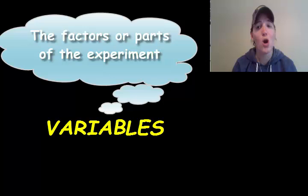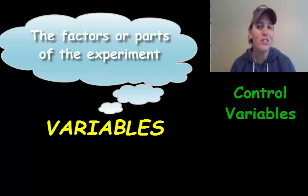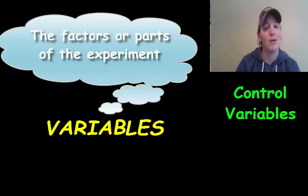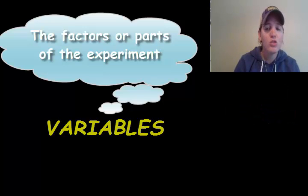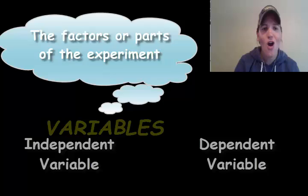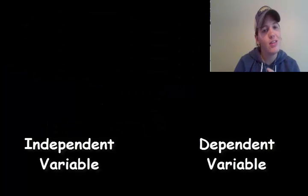Variables are the factors or parts of the experiment. Most of the time there are things that change, but they're actually things that stay the same too that we're going to talk about in the next video segment. The two types of variables that change are the independent variable and the dependent variable.